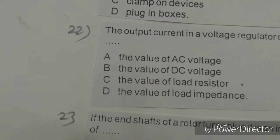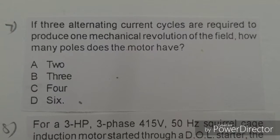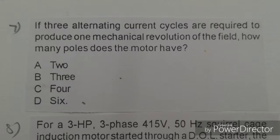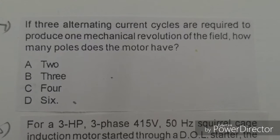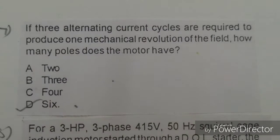Next objective: If three alternating current cycles are required to produce one mechanical revolution of the field, how many poles does the motor have? Options given: two, three, four, six. The right answer is D, six poles.